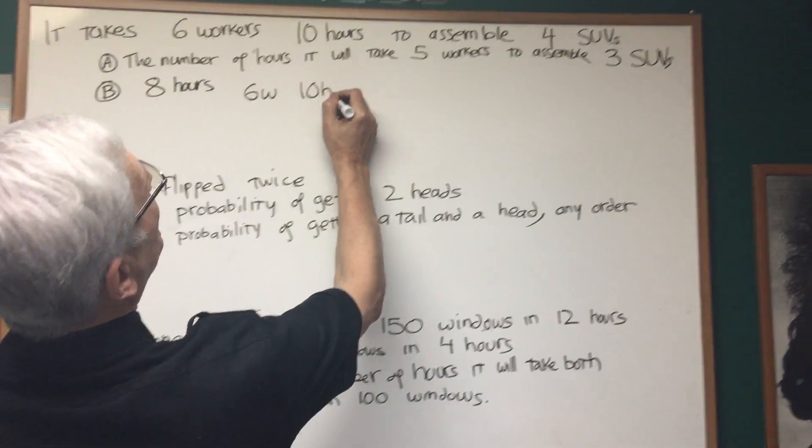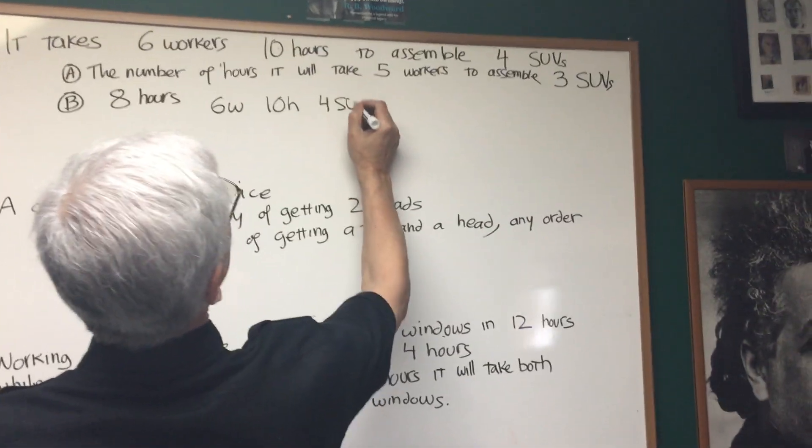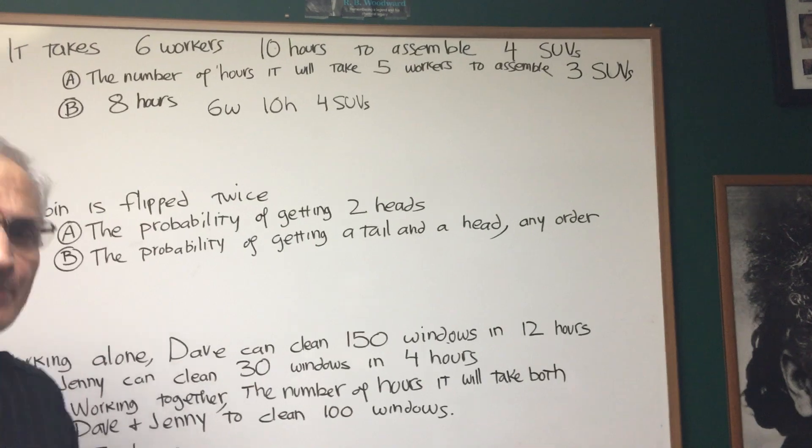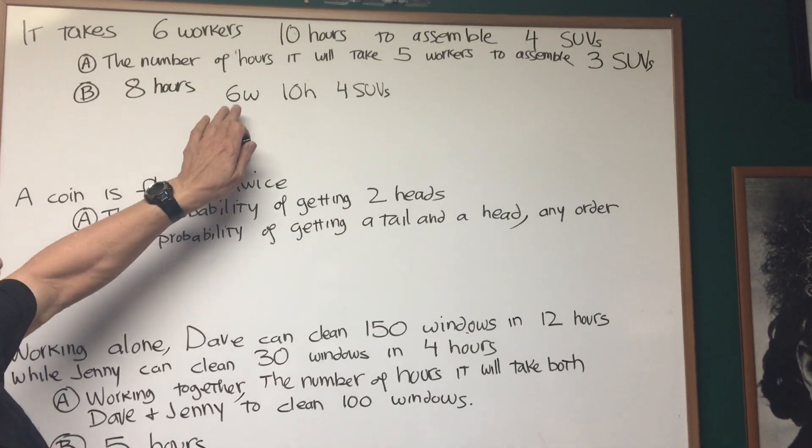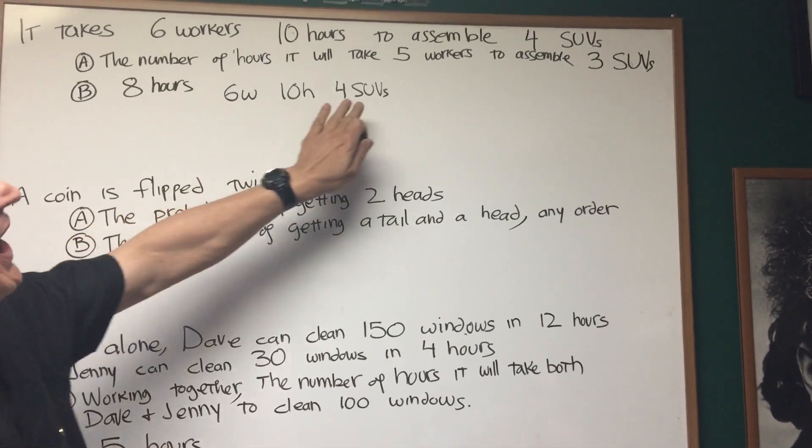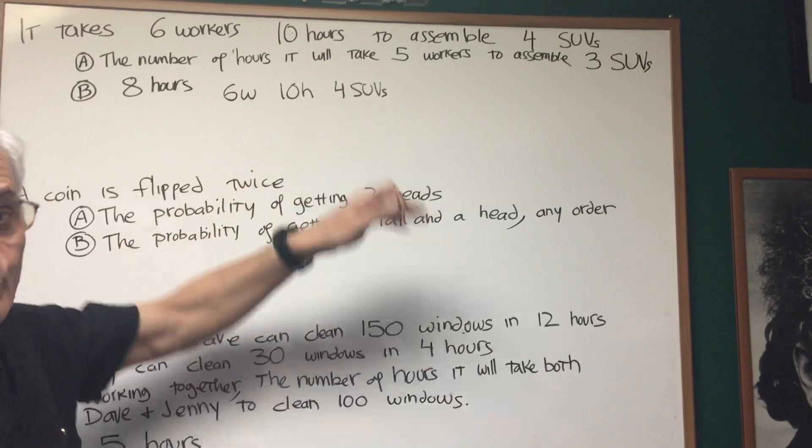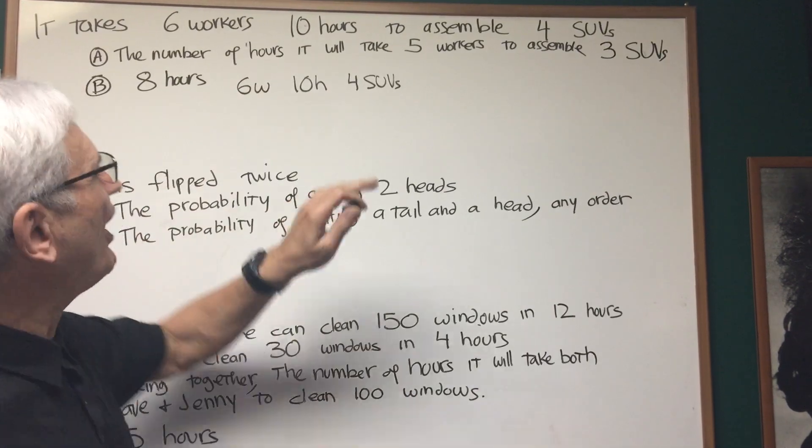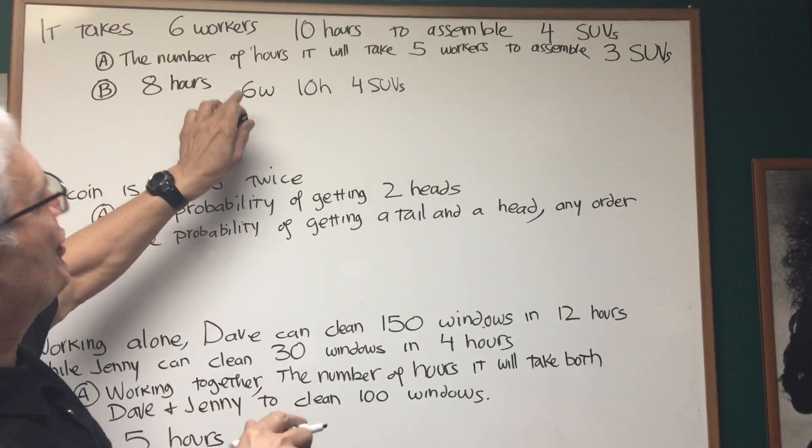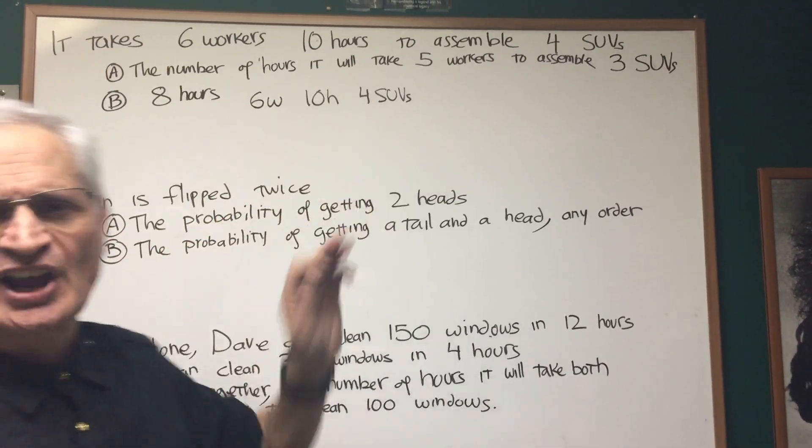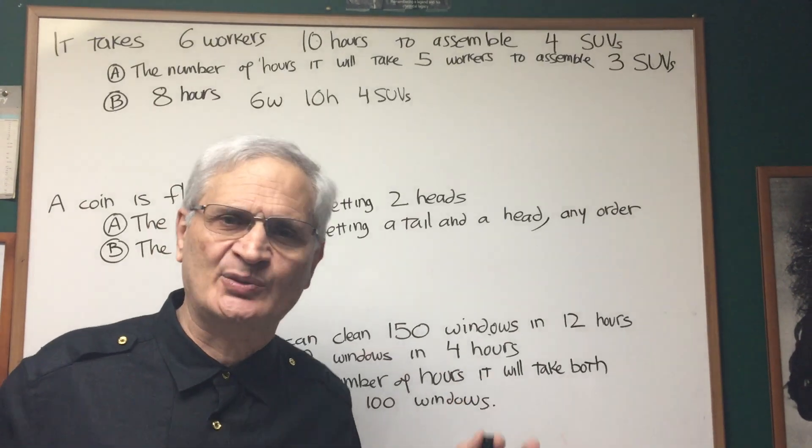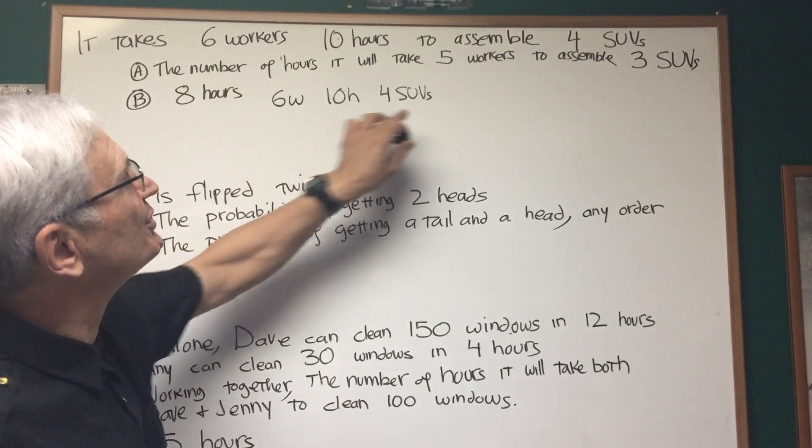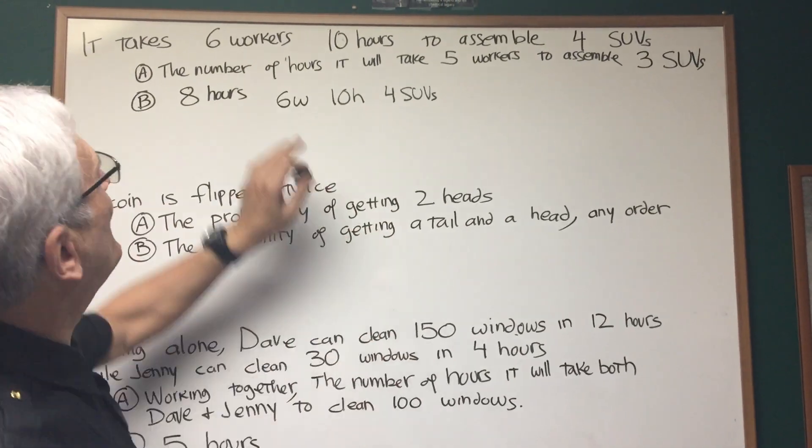Six workers, ten hours, four SUVs. Now, the approach we want to take, we want to find, we want to change six workers to five workers and four SUVs to three SUVs. How are we going to do that? Well, the technique I like to use is to one-ify these two end expressions, the six workers and the four SUVs. There's no such word in the English language as one-ify. We want to make these two things one. You'll see how. Okay, let's think this logically. If it takes six workers ten hours to do a job, how long would it take one worker? Well, it's going to take six times as long. It's going to take sixty hours to make those four SUVs, right?